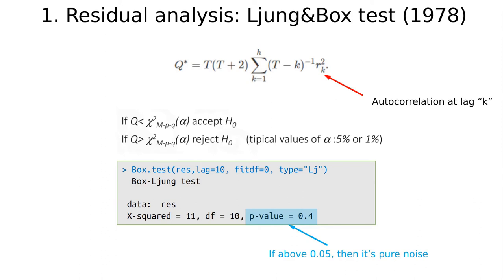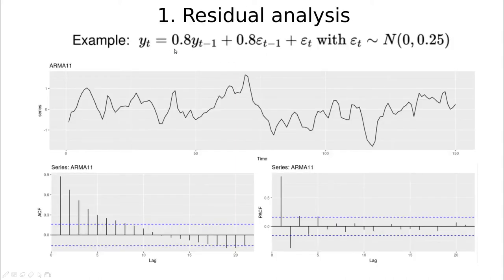To me, visual inspection is always better than any statistical test. Let me show you an example. Let's take this process — we have one coefficient for y(t-1) and one coefficient for epsilon(t-1), so this is an ARMA(1,1) process. This is how it looks. Model identification is not that simple because you can see that you have a lot of bars here, which is of course a signature that something is going on with the autoregressive part.